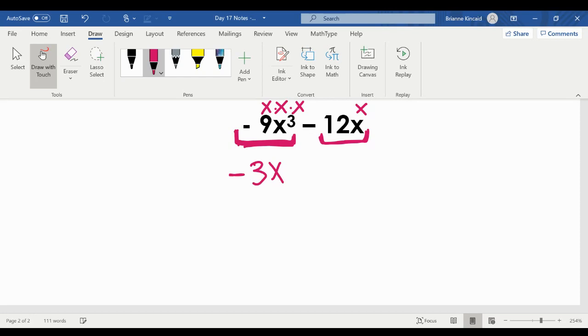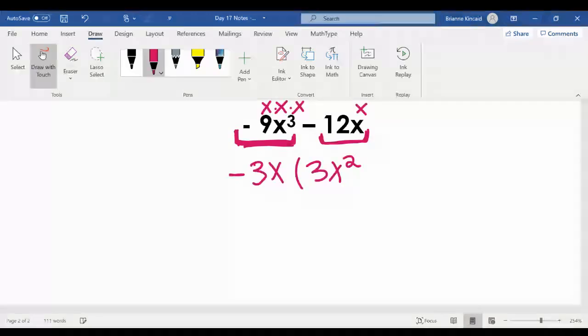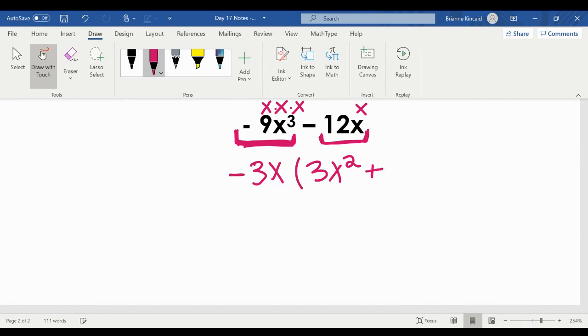When I do this, I take negative three from negative nine. That leaves me with positive three because if I were to redistribute, negative three times three would bring me back to negative nine. You've taken one x from x³. That means you have two left. So that's x². I take out the negative three from negative 12. That becomes positive four. And then I take the x from the x. So really, you're left with one. But it's not necessary to include that times one. We just leave it as plus four.